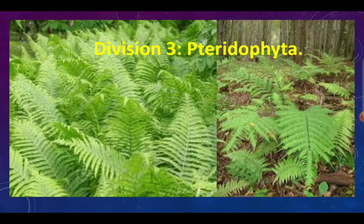The next division is pteridophyta. We have learned the first division thallophyta and the second division bryophyta. Pteridophyta is an advanced stage beyond bryophyta. You will find these plants near wells or wherever there is large amounts of moisture. They are usually called fern plants — there is one at our school entrance. Different types of ferns exist, with small or large flat leaves, and from this division you can differentiate the plant into true root, stem, and leaves.